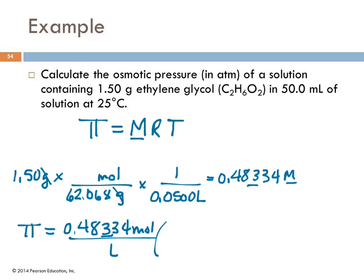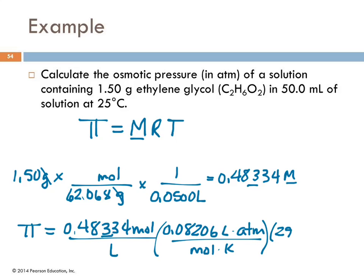Osmotic pressure π = 0.4833 M × 0.08206 L·atm/(mol·K) × 298 K = 11.8 atm. This means 11.8 atmospheres of pressure on the solution side would be needed to prevent osmosis from occurring. Reverse osmosis works by applying pressure greater than the osmotic pressure to push solvent backward across the membrane.